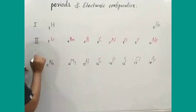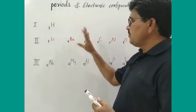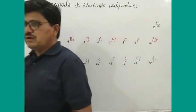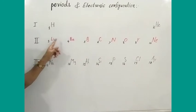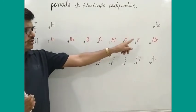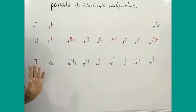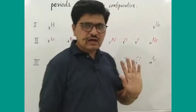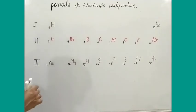The first period contains only two elements: hydrogen and helium. The second period contains eight elements: lithium, beryllium, boron, carbon, nitrogen, oxygen, fluorine, and neon. The third period also contains eight elements: sodium, magnesium, aluminium, silicon, phosphorus, sulfur, chlorine, and argon.